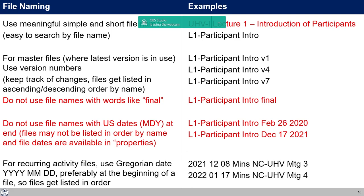For recurring files — such as minutes of meetings — if you need to include a date, use Gregorian date format: YYMMDD or YYYYMMDD, either at the beginning or end of the file name. Alternatively, you can name files with a sequence like 'Minutes UHV Meeting 3,' 'Meeting 4,' etc. in a standard format without dates at all. This makes files easy to find by name or content search.